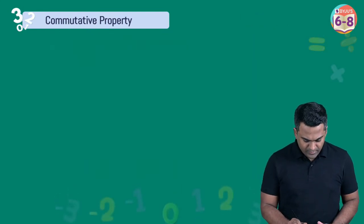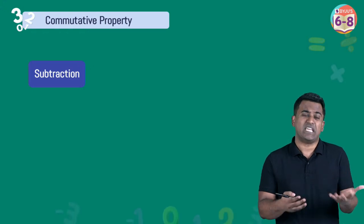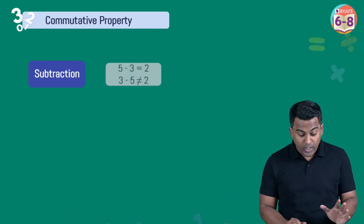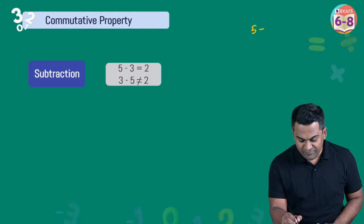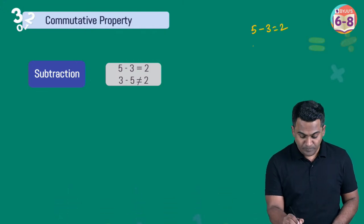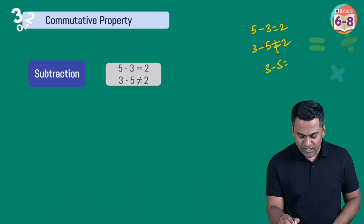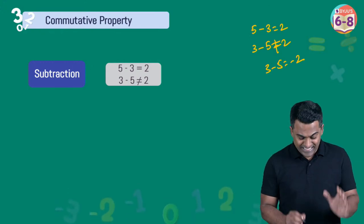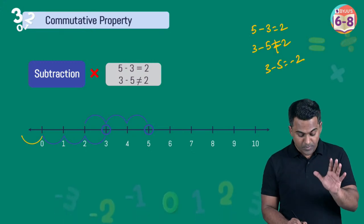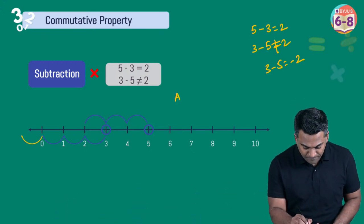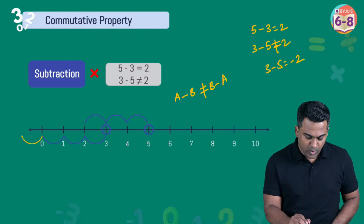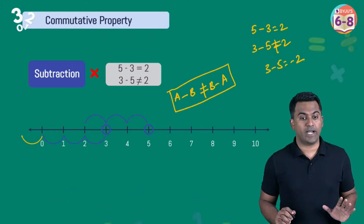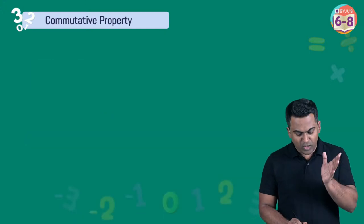Does order matter in subtraction? Yes it does. Five minus three equals two, but three minus five equals negative two — not the same result. So we write a − b ≠ b − a. Subtraction does not follow the commutative property.